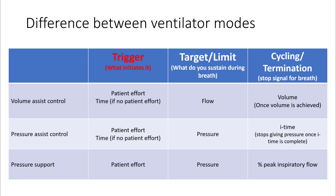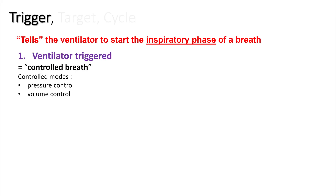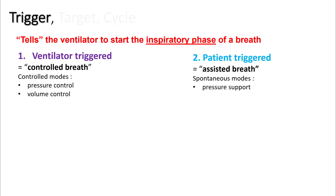For example, in volume assist control, the trigger is either patient effort or time, the target is flow, and the cycling occurs when the volume is achieved. Trigger tells the ventilator to start the inspiratory phase of the breath. There are two types of triggers: first is the ventilator trigger, also called controlled breaths, and second is the patient trigger, which is called assisted breath.